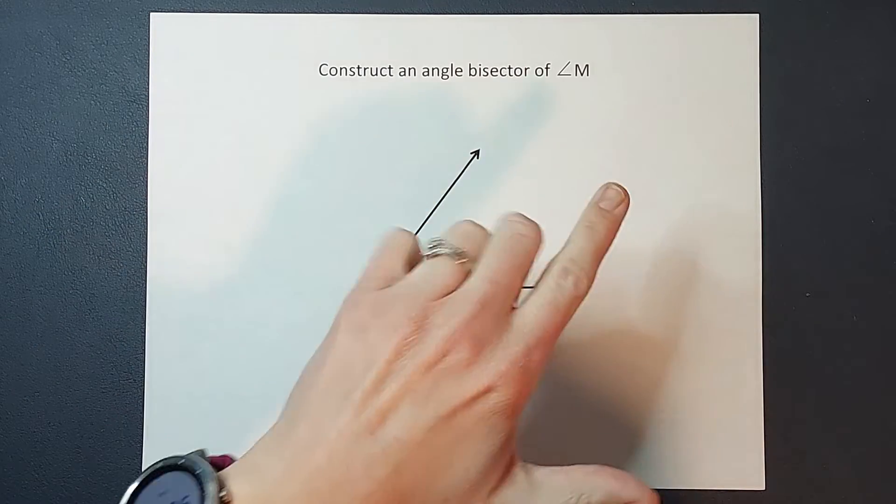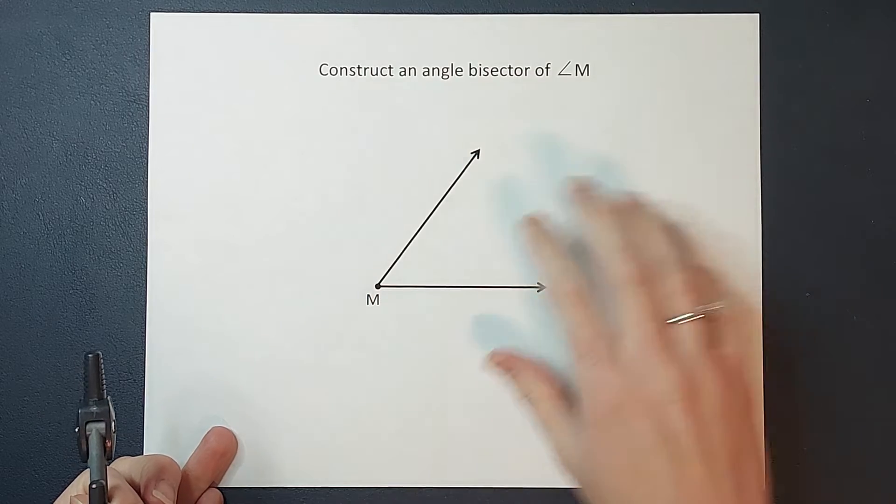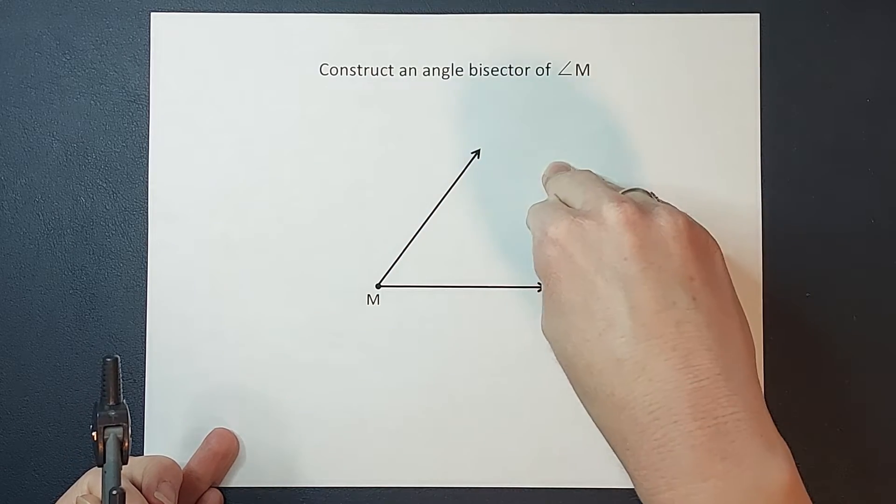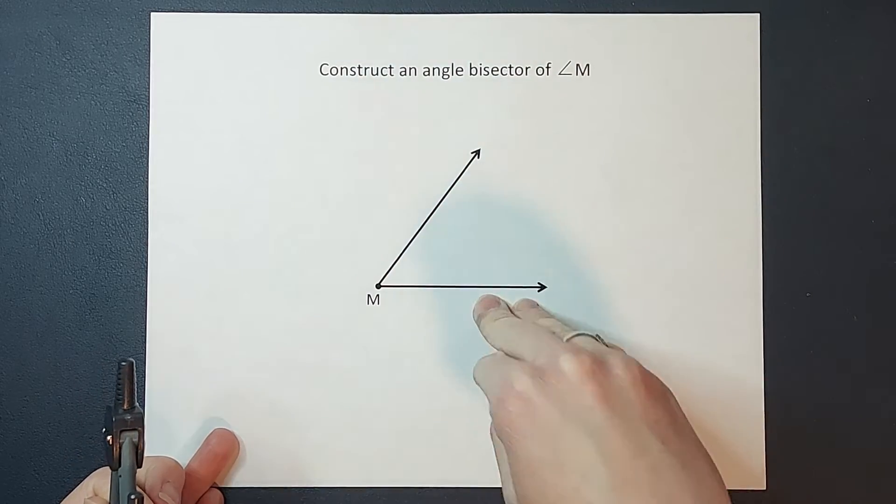So we want to find an angle bisector, which means a line that will cut this angle in half into two equal angles.